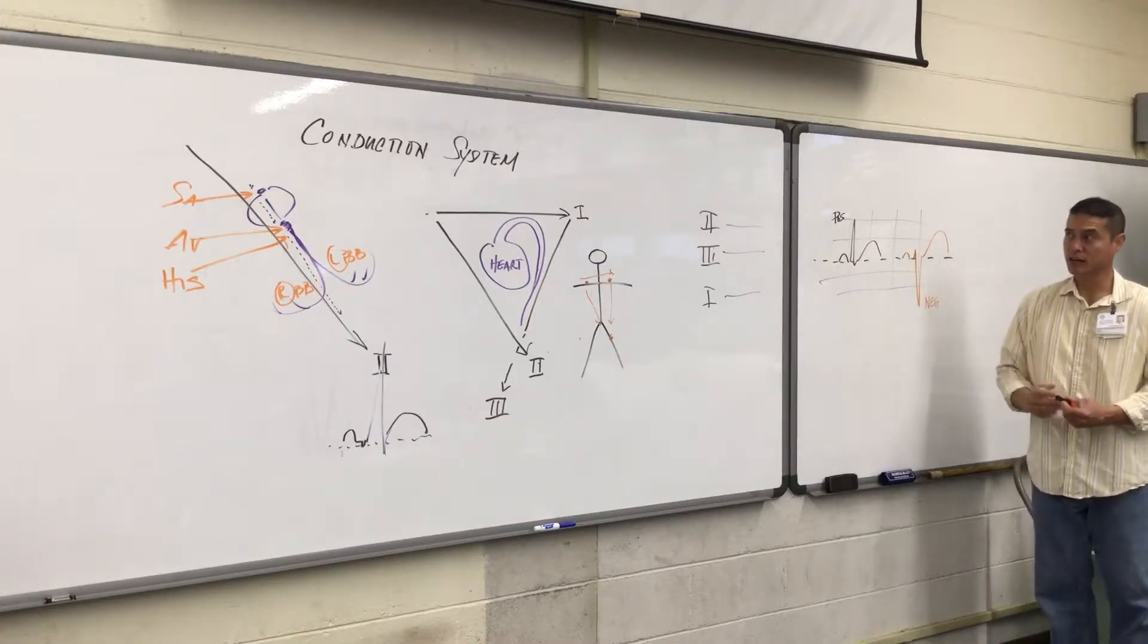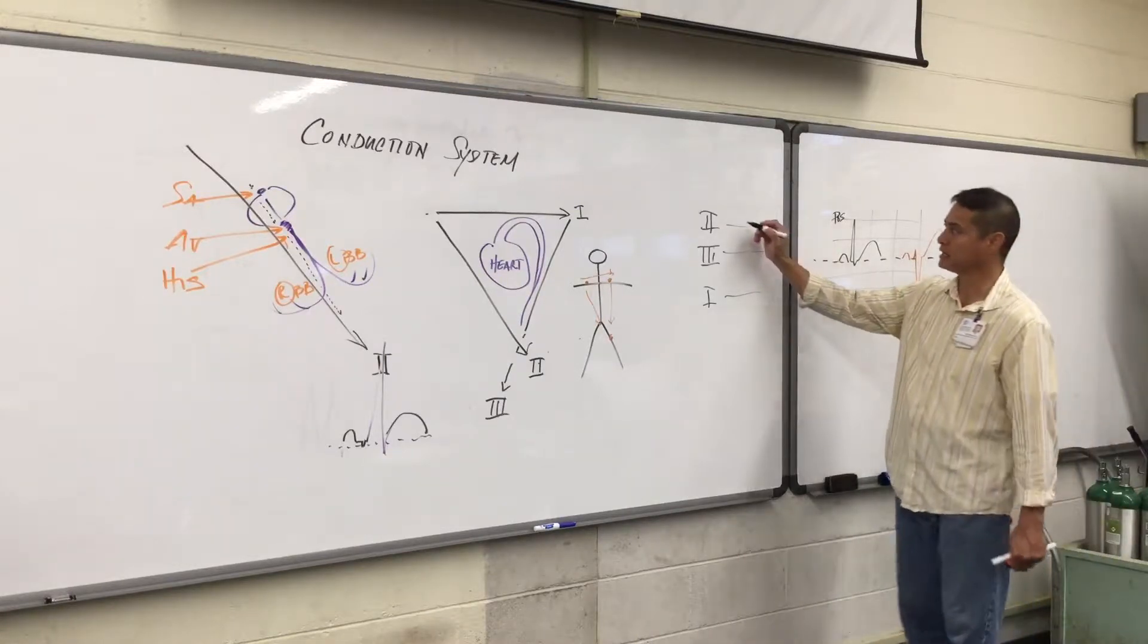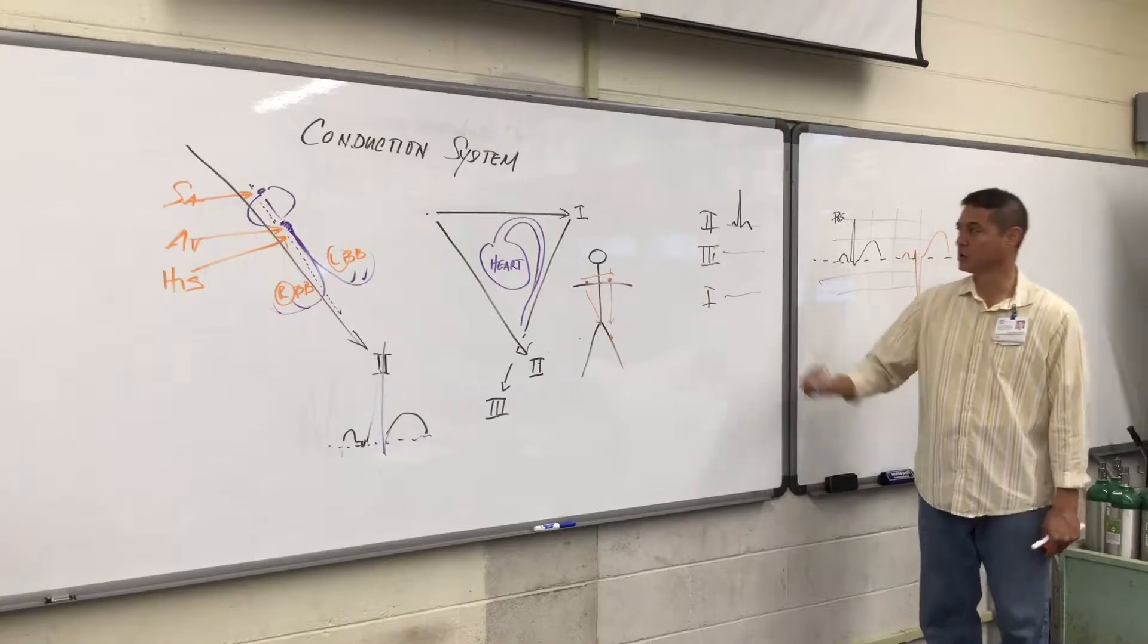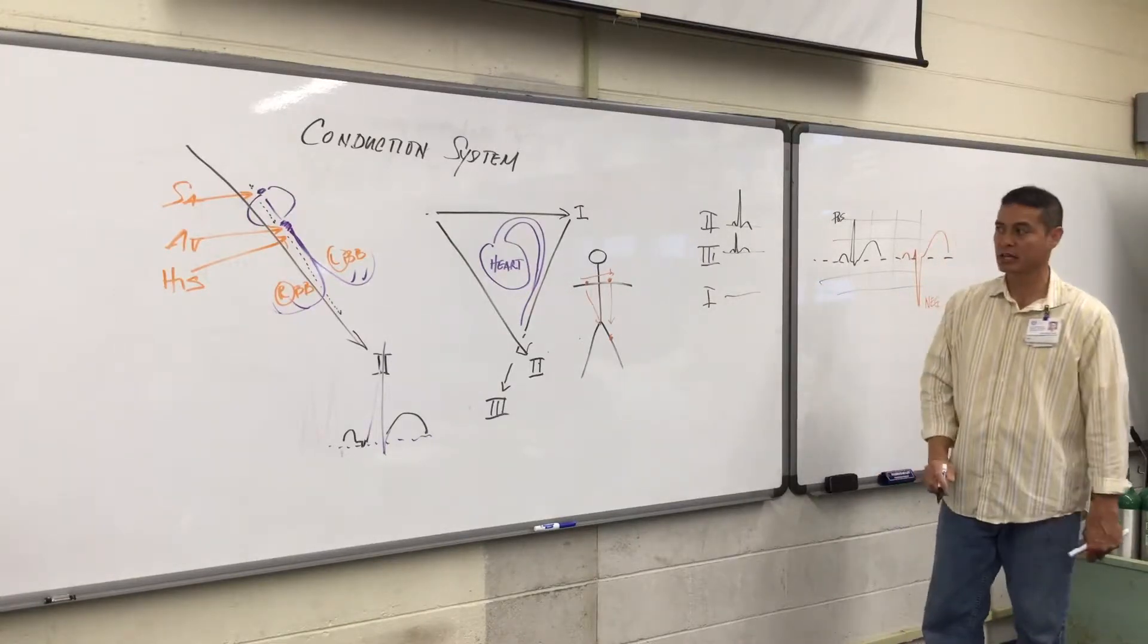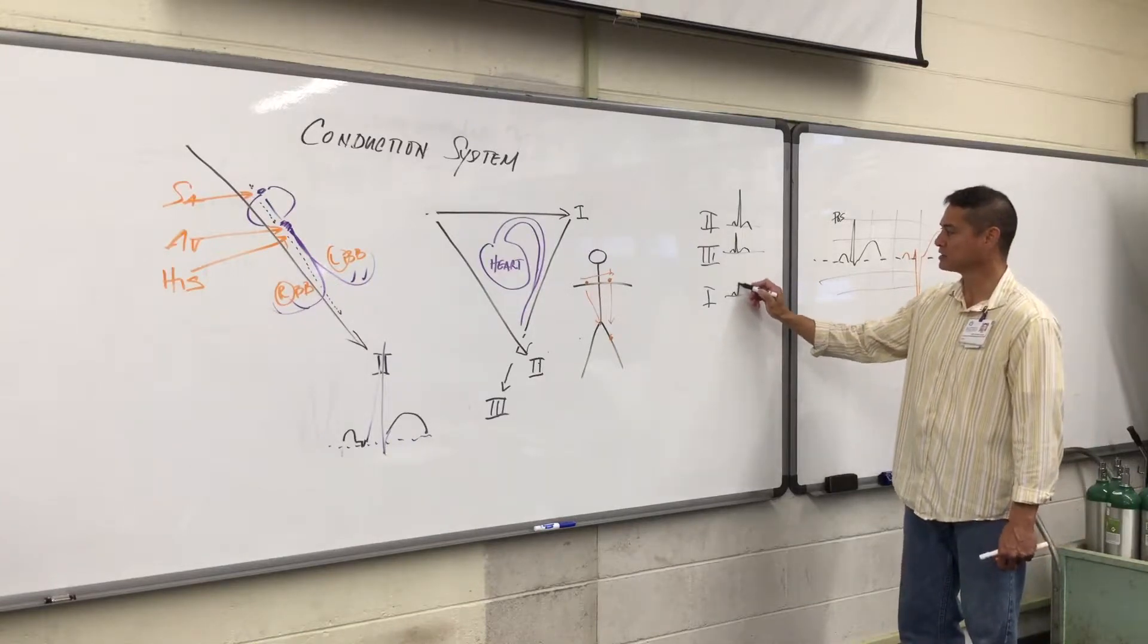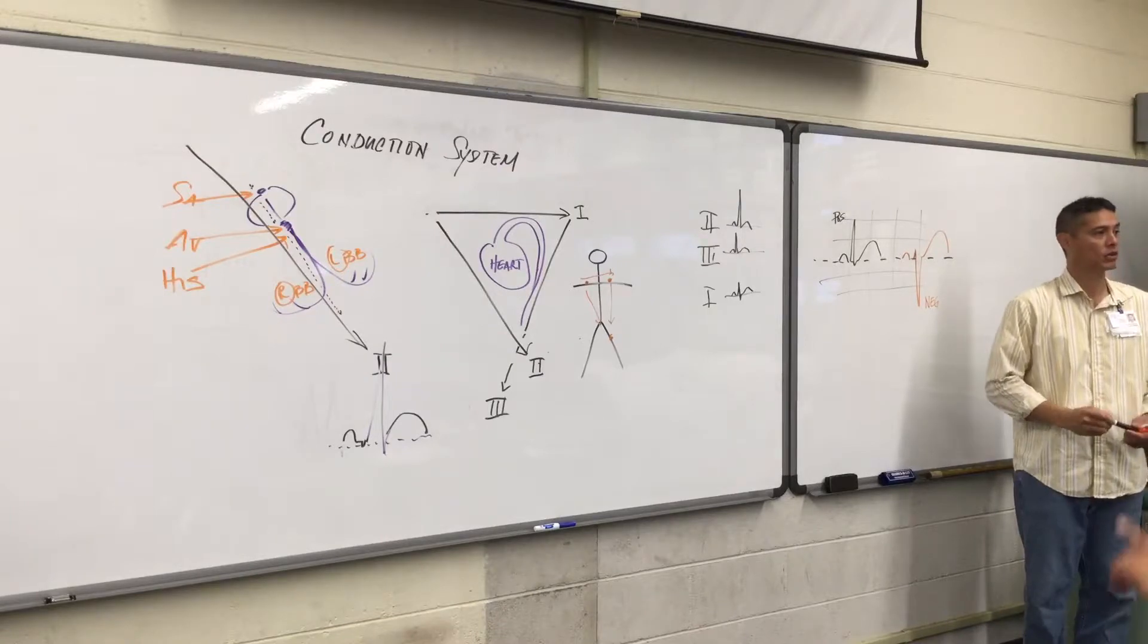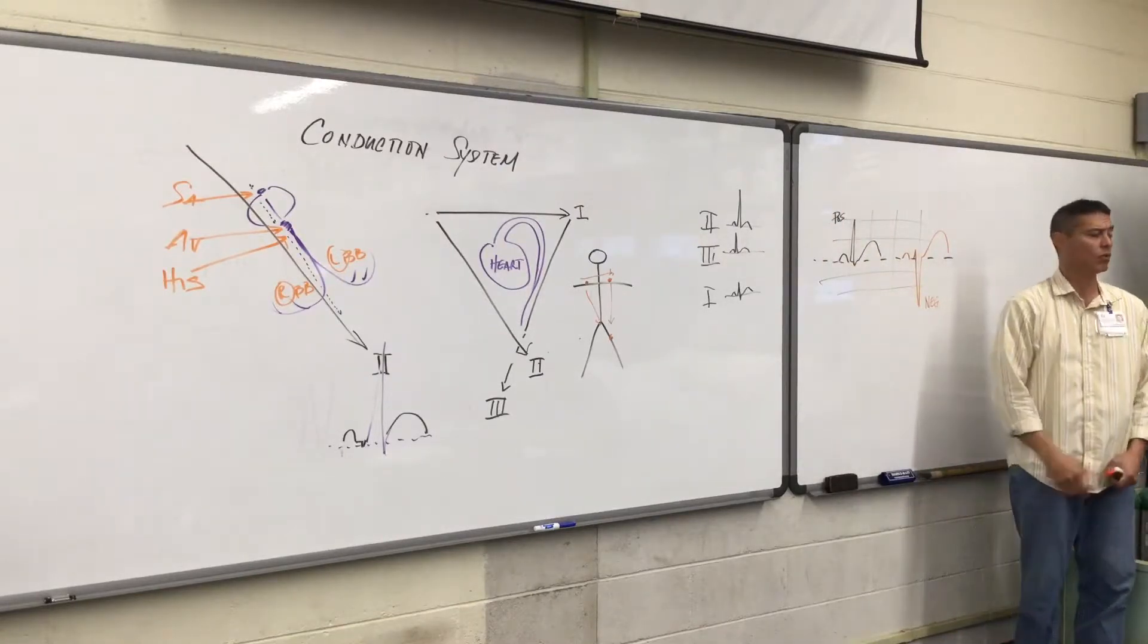When we're looking at our standard 1, 2, and 3, we're going to notice that EKG is really large and positive in lead 2. We should also see an upright positive in lead 3. And in lead 1, we should see somewhat mostly positive again, but smaller because the flow of all that energy is not going directly towards lead 1.